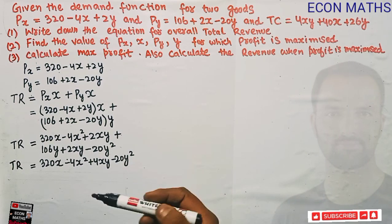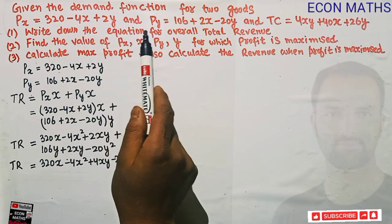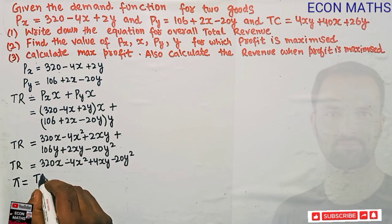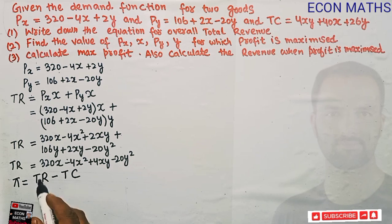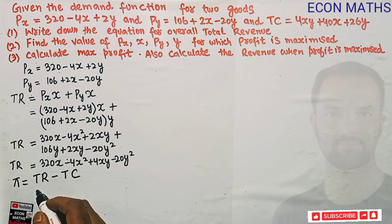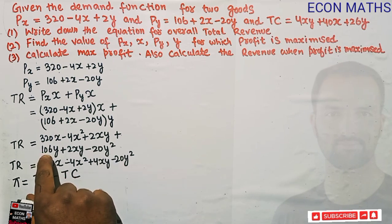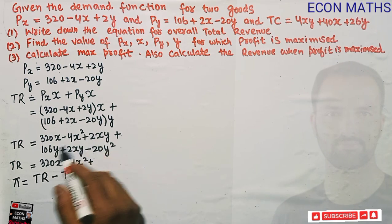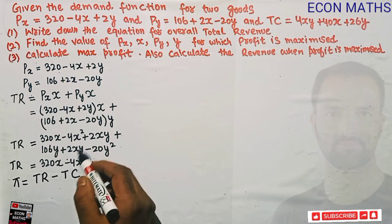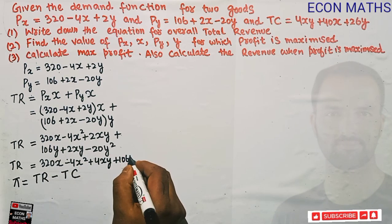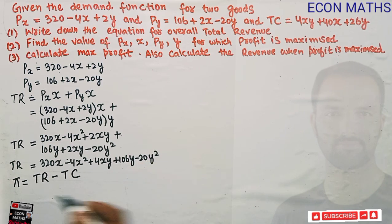Now for the second part, we need to find the profit function. Profit equals total revenue minus total cost. I had missed the 106Y term earlier, so the corrected total revenue is TR = 320X - 4X² + 4XY + 106Y - 20Y².